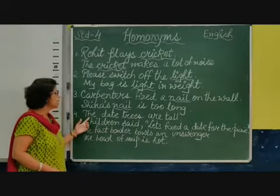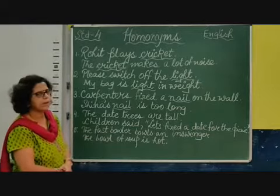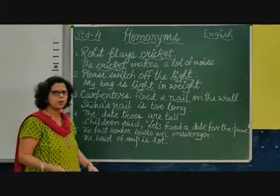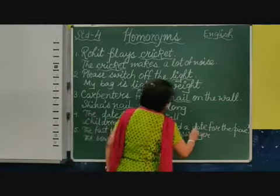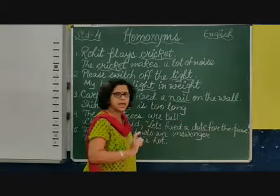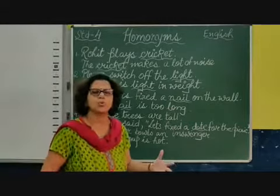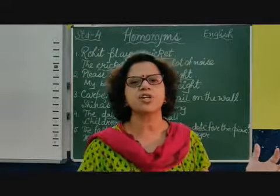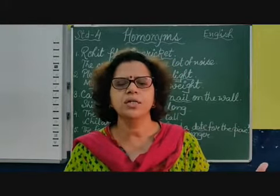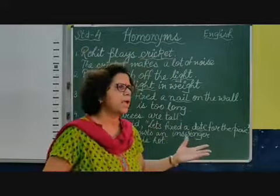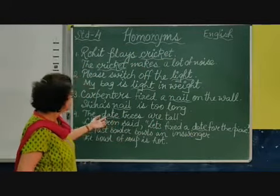Fourth one: 'The date trees are gone' and 'Children said let's fix the date for the picnic.' Which word is common in both sentences? Yes, you are correct — it is 'date.' D-A-T-E. The date trees are those trees that grow in the desert — that is the khajur. You eat dates — the palm, date palms. So 'date' here is that fruit tree.